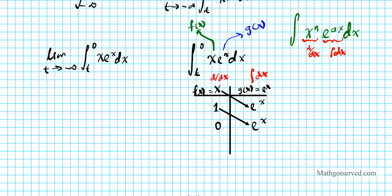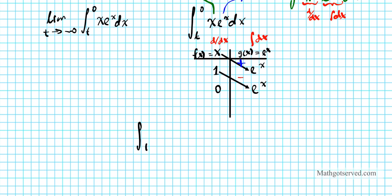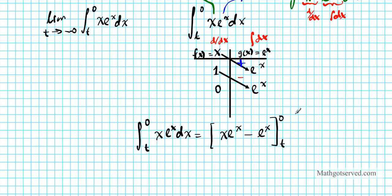Remember the sign pattern: you always start with a positive for the first diagonal, then the next is negative, alternating plus, minus, plus, minus. So the integral from t to 0 of x e to the x dx is simply the first product — x times e to the x — minus the product of the next pair, which is just e to the x, evaluated from t to 0. You could have used the integration by parts procedure, but this tabular method is quicker — just set up your table, differentiate one column, integrate the other, put them together.